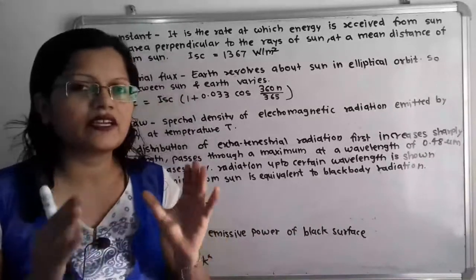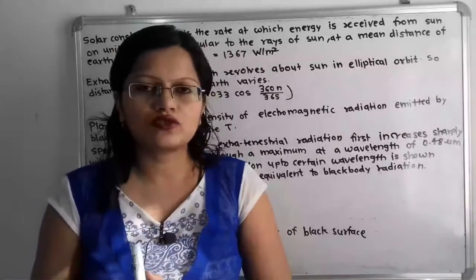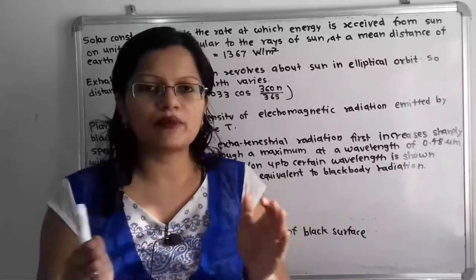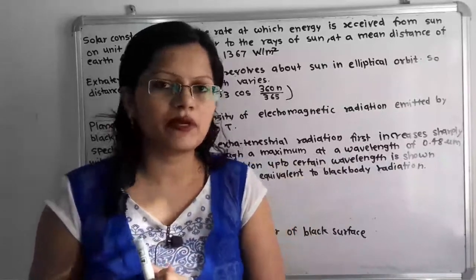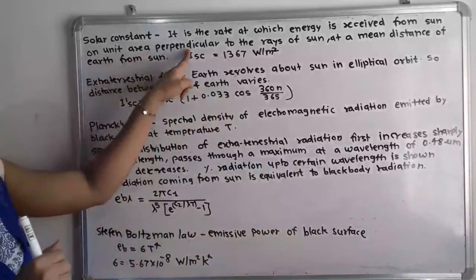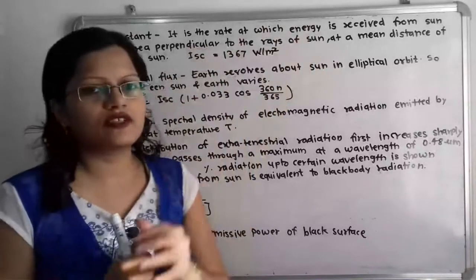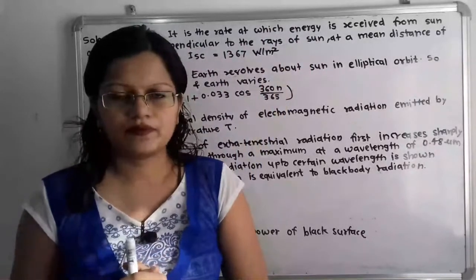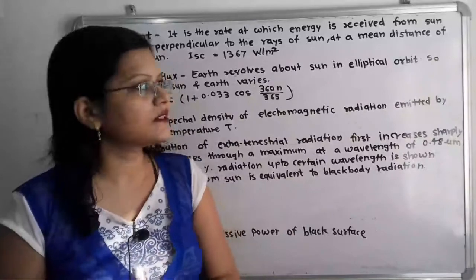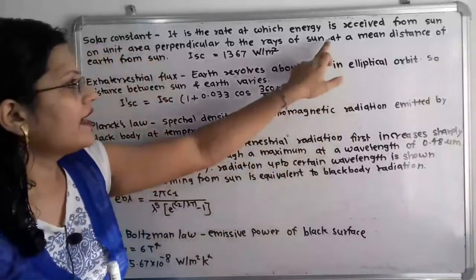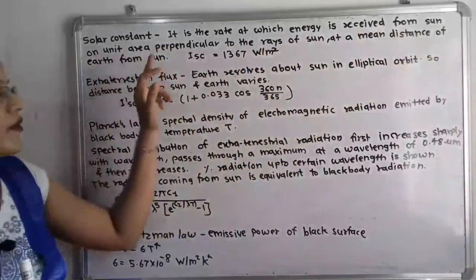What is the unit area? That means 1 centimeter square or 1 meter square. For standard dimensions, we will consider the unit area to be 1 meter square. Now that area should be perpendicular to the rays of the sun, and at a mean distance of the earth from the sun.